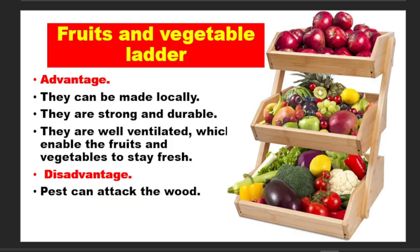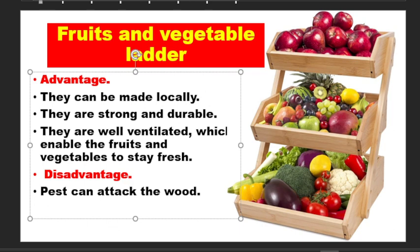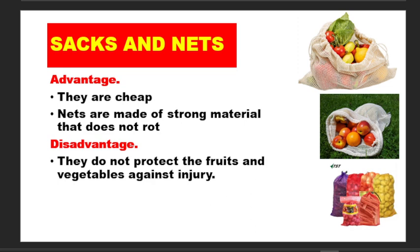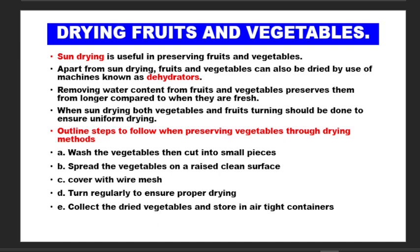Let's look at the fruits and vegetables ladder. They are made locally using timber, and they are well ventilated, which enables the fruits and vegetables to stay fresh. However, pests can attack the wood, so it might not be able to continue accommodating the fruits and vegetables. As for sacks, they are cheap and made of strong material that does not rot, but they do not protect the fruit from injury and they can be damaged.